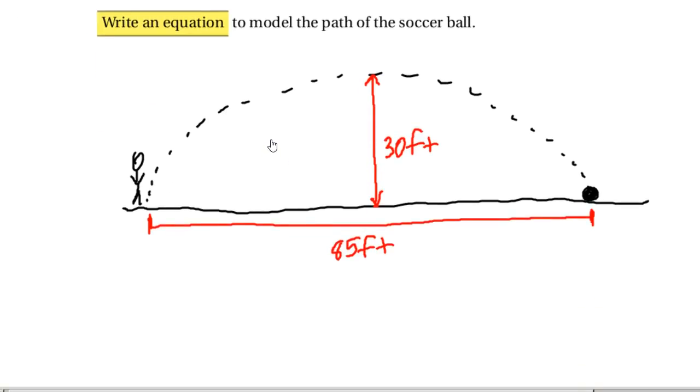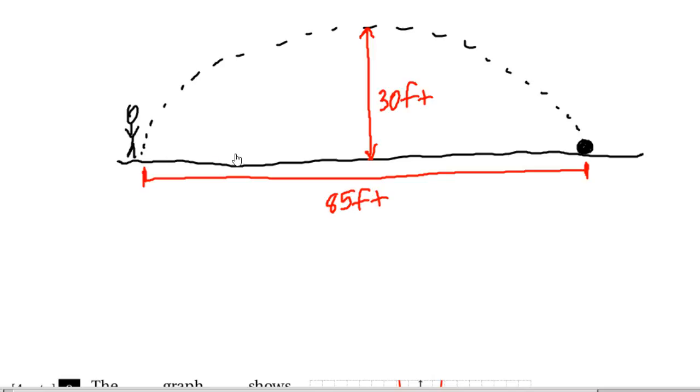We can see from the drawing right here that I've already put the soccer ball and labeled my dimensions. Now we need to actually translate this into a coordinate grid. I'm going to put my origin right here, right smack dab in the middle.